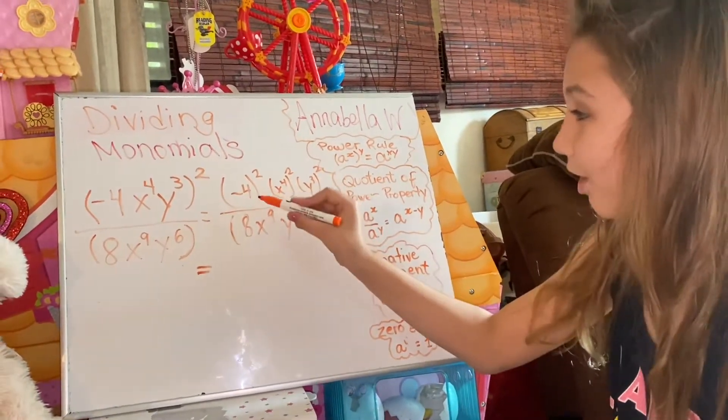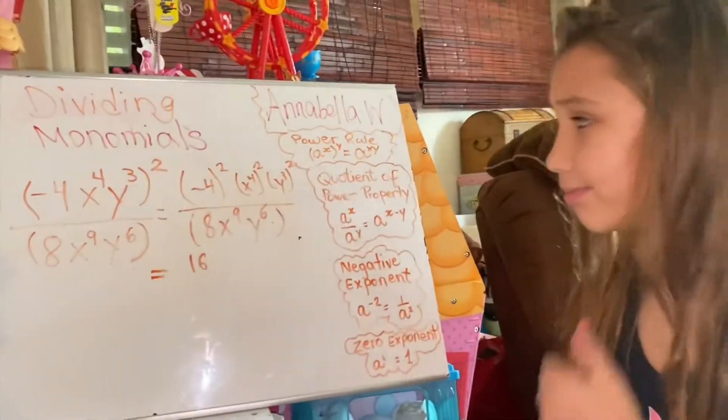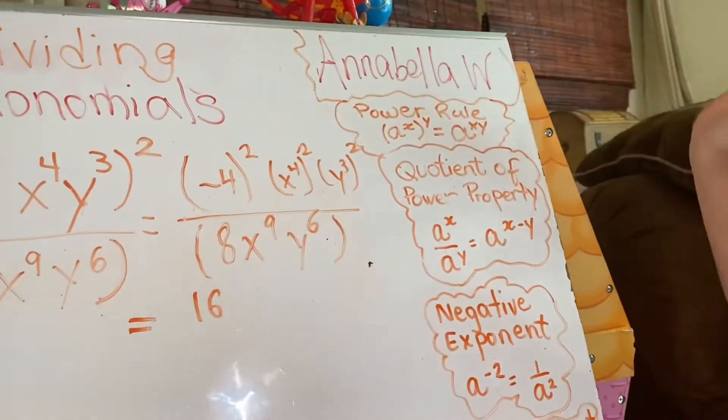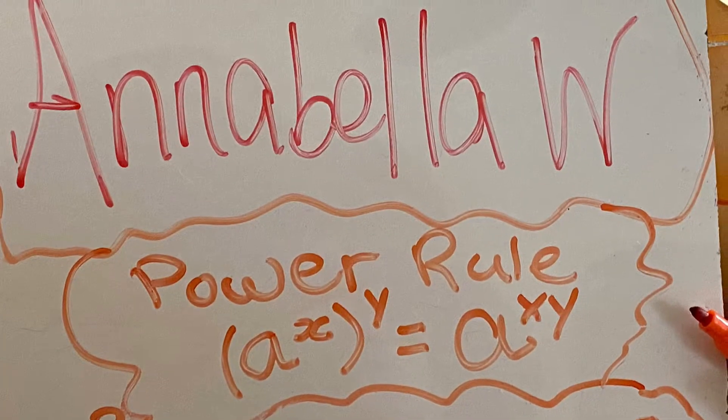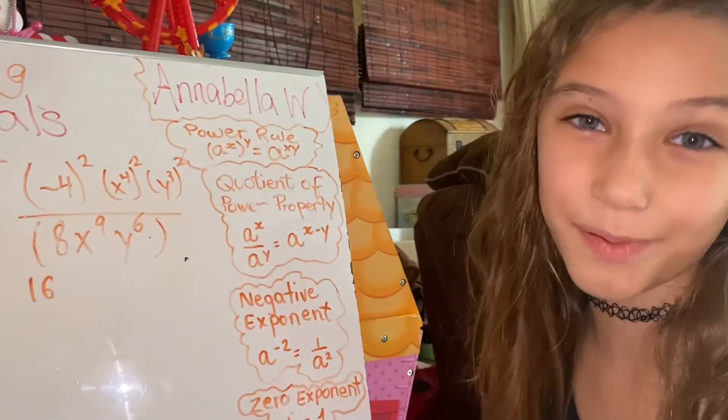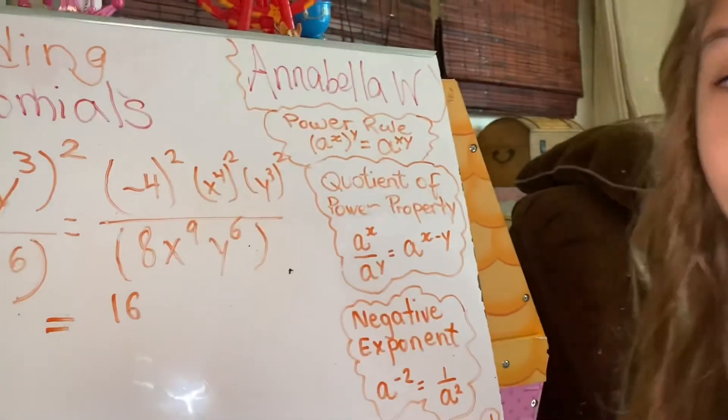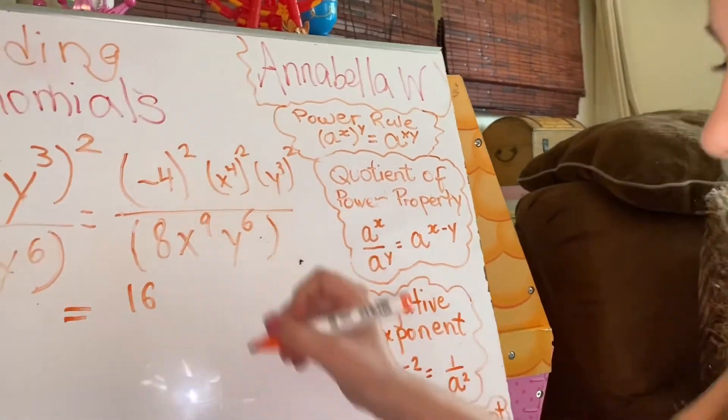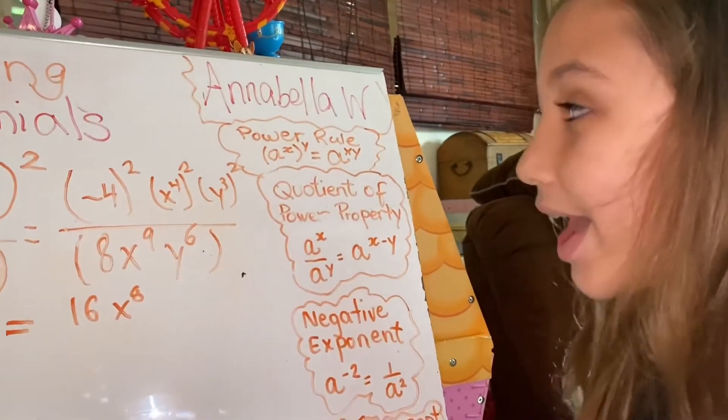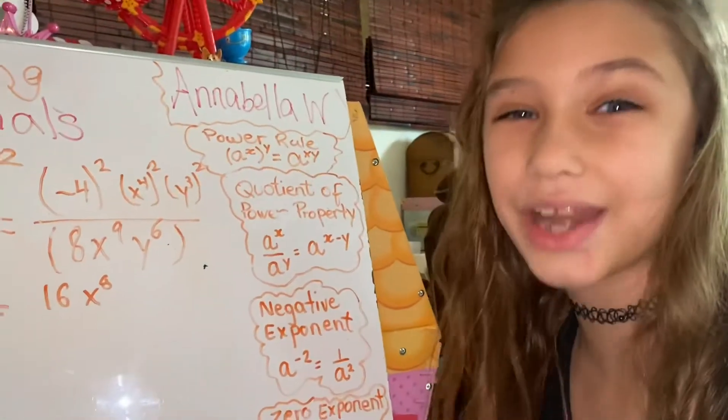Negative 4 raised to the power of 2 is 16. But how do we solve x? Well, we use the power rule. We're going to multiply the exponents. So that would be x, 4 times 2 is 8, so x by the power of 8. The same rule applies to y. 3 times 2 is 6, so y by the power of 6.